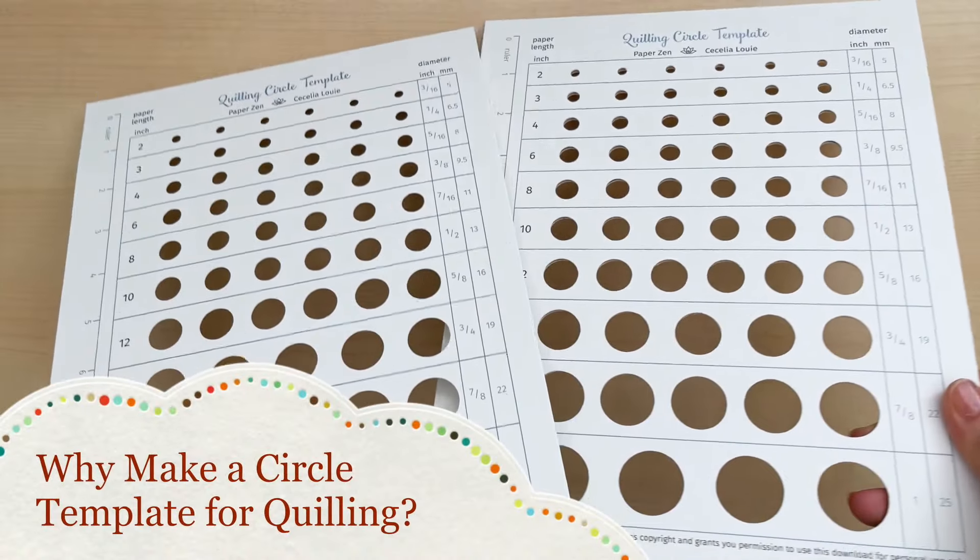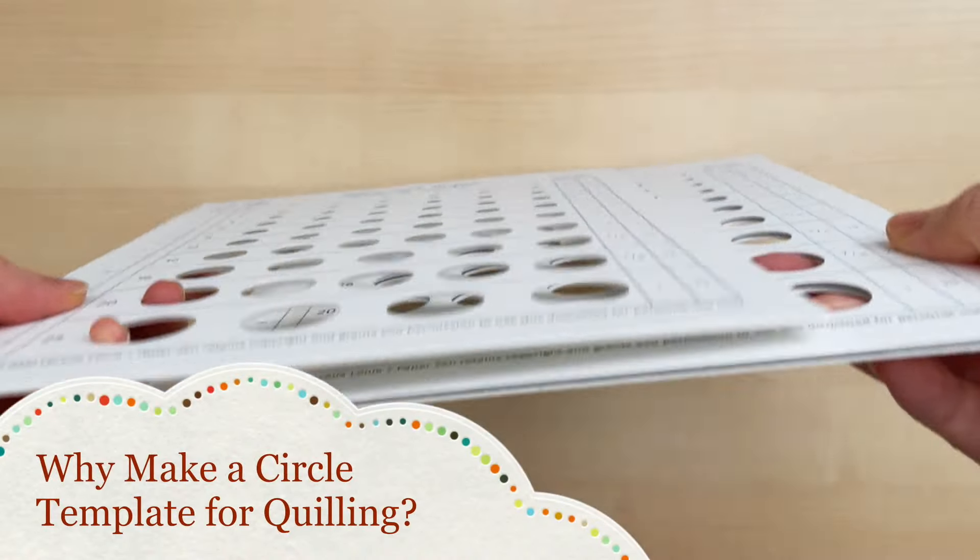Here are the two templates I've cut. They both look similar on top, and if you look from the side, the one on the left is made of six layers of cardstock.